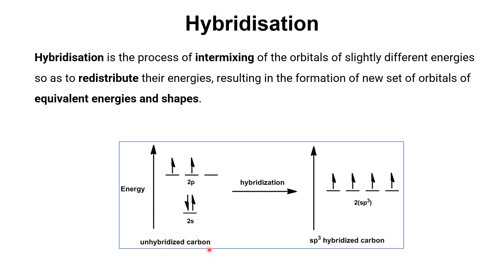The 2s orbital has lesser energy than the 2p orbital. Carbon has 2 electrons in the 2s orbital and 2 electrons in the 2p orbital. When hybridization takes place, all the orbitals come to the same energy level and the electrons redistribute so that each orbital gets one electron. Since all s and all p electrons are involved, this is called sp3 hybridized carbon. Because the 2s and 2p orbitals are not very different in energy, they intermix to give rise to hybridized orbitals.